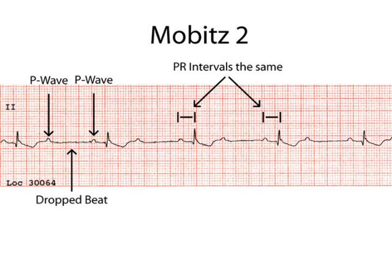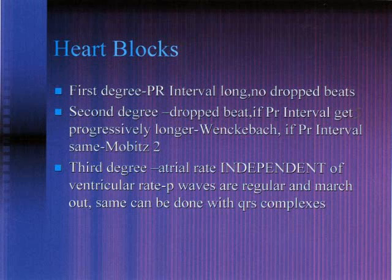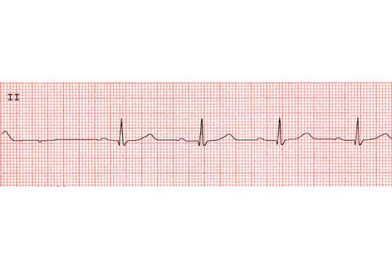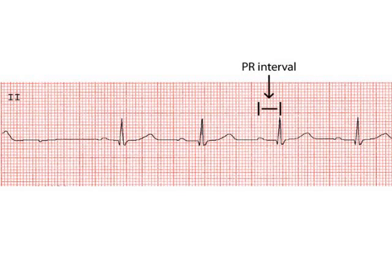This might be a good time to review heart blocks. There are three major heart blocks: first degree, second degree — of which there are two, which Dean just pointed out — and third degree. For first degree, the next example really focuses on the PR interval: the PR interval is long, greater than one big box, 0.2 seconds, but there are no dropped beats. Dean, you went over one of the second degree blocks; can you describe what happens with Wenckebach?